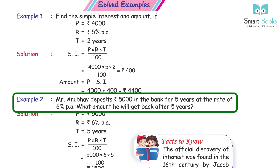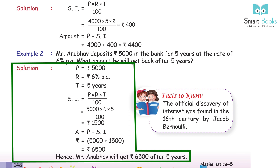Example 2: Mr. Anubhav deposits Rs 5,000 in the bank for 5 years at the rate of 6% PA. What amount will he get back after 5 years? Solution: P = Rs 5,000, R = 6% PA, T = 5 years. SI = 5000 × 6 × 5 ÷ 100 = Rs 1,500. Amount = 5,000 + 1,500 = Rs 6,500.